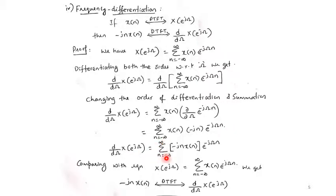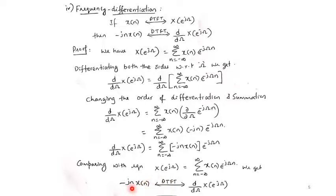Comparing this with the DTFT equation — where instead of x(n) we have (−j·n·x(n)) — we can write that the DTFT of (−j·n·x(n)) is d/dω of X(e^{j\omega}). This property is called frequency differentiation because, in the frequency domain, differentiation with respect to ω corresponds to multiplication by the ramp signal n (with a factor of −j).